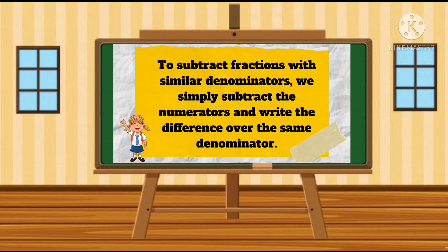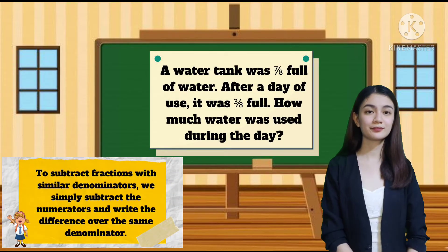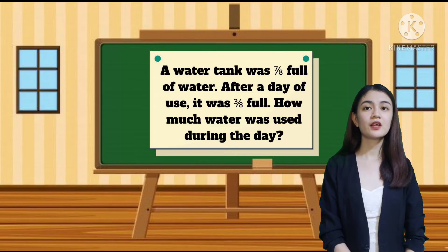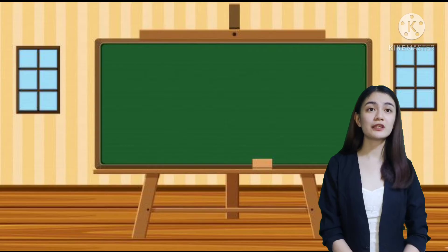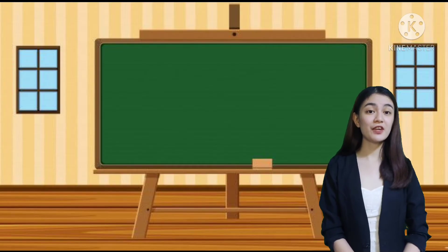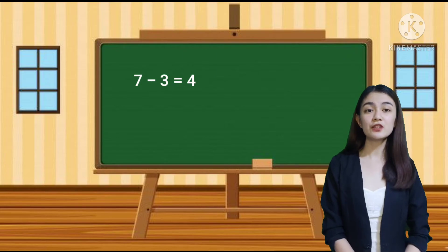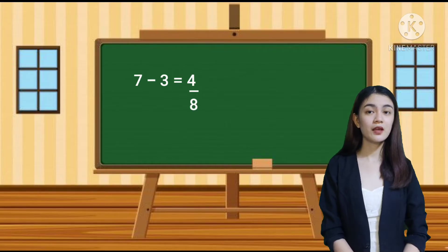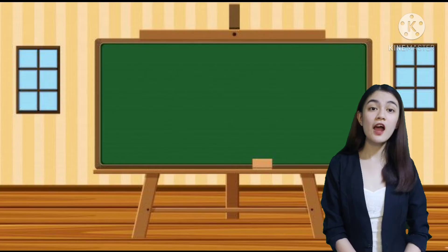To subtract fractions with similar denominators, we simply subtract the numerators and write the difference over the same denominator. What is asked? What are given? To find the amount of water that was used during the day, we subtract 3 eighths from 7 eighths. Simply subtract the numerators: 7 minus 3 equals 4, and write it over the same denominator, which is 8. We get 4 over 8.